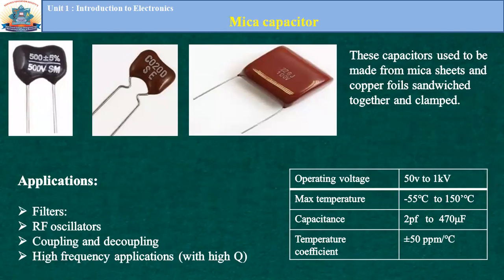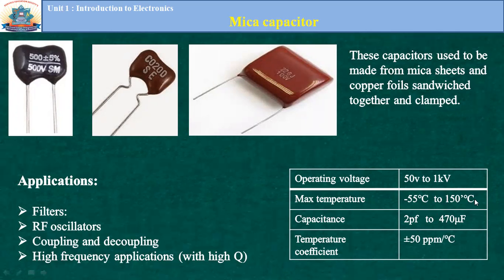Mica capacitors are made using mica as the dielectric material between parallel plates in a sandwich structure. Operating voltage lies between 50 V to 100 kV, so they can be used for power applications. Maximum temperature is minus 55°C to 150°C. Capacitance is 2 pF to 417 µF. Temperature coefficient is ±50 ppm per degree Celsius. Mica capacitors are used in designing communication systems and during RF transmissions.